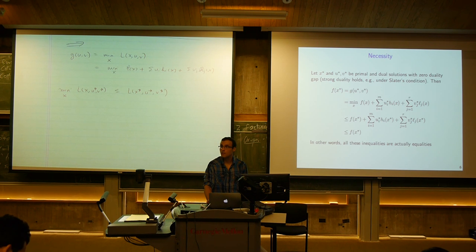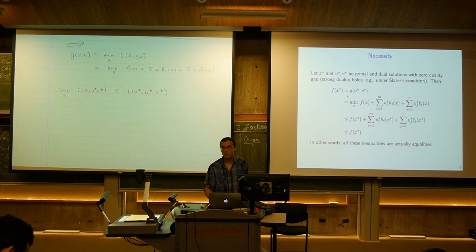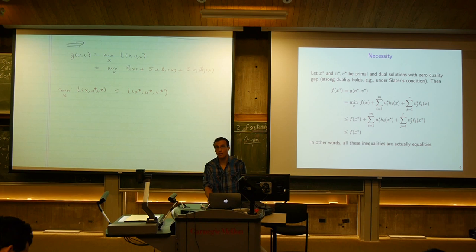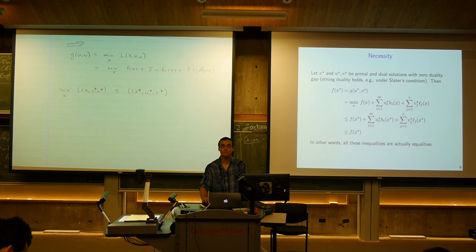We didn't need to use Slater's condition directly — we needed strong duality, that the primal criterion at its optima equals the dual criterion at its optima. That could happen even for a non-convex problem, in which case this argument still goes through.